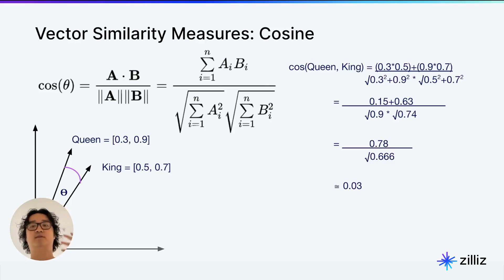So in our case, it's what we just did earlier, the dot product: 0.3 times 0.5 plus 0.9 times 0.7. And then we also have to take the magnitudes of the vectors, which for queen is 0.3 squared plus 0.9 squared, and for king is 0.5 squared plus 0.7 squared.